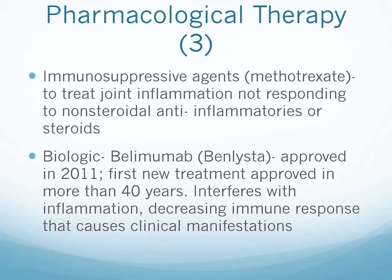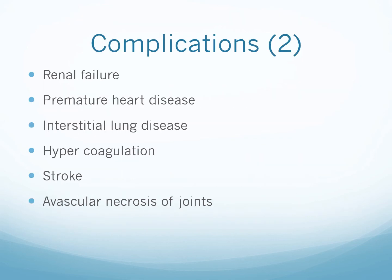Even in the context of lupus, DMARDs such as methotrexate can come into play. Benlysta, a biologic approved since 2011, was the first new treatment approved in more than 40 years — it will interfere with inflammation, decreasing the immune response that causes clinical manifestations. Complications of SLE include renal failure, premature heart disease — particularly significant in a very young population starting at age 16 — interstitial lung disease, hypercoagulation, risk for stroke, and avascular necrosis of joints.